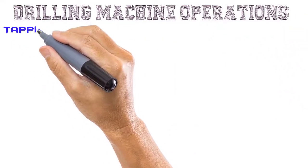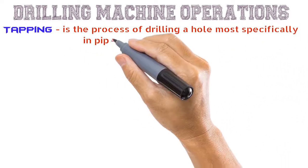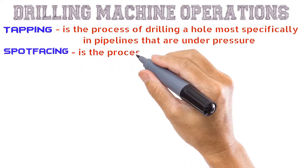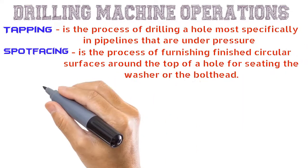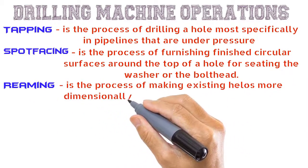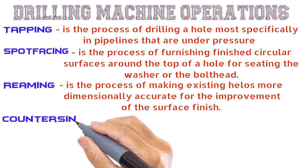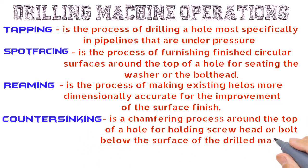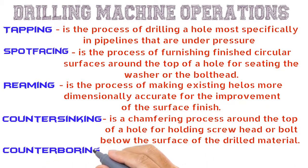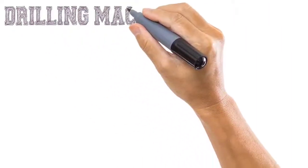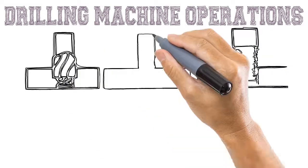Tapping is the process of drilling a hole most specifically in pipeline lines that are under pressure. Spot facing is the process of furnishing finished circular surfaces around the top of a hole for seating a washer or bolt head. Reaming is the process of making existing holes more dimensionally accurate for the improvement of the surface finish. Countersinking is a chamfering process around the top of a hole for holding the screw head or bolt below the surface of the drilled material. Counter-boring is the process of enlarging an already drilled hole for the accommodation of a screw head.